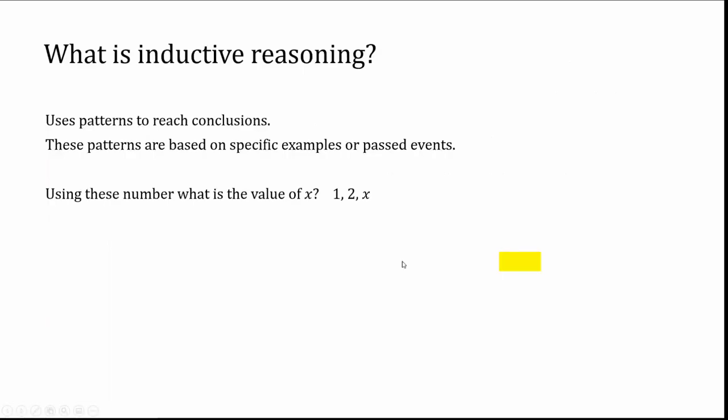Let's actually take a look at what inductive reasoning is. Inductive reasoning uses patterns to reach conclusions, and these patterns are based on specific examples or past events. Using the numbers given, what is the value of X? We're going from 1 to 2 — we want to know what the next number is.